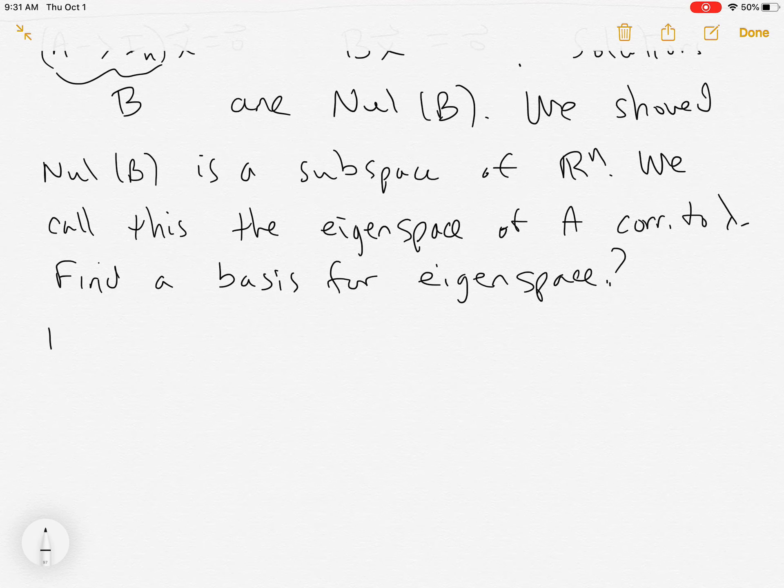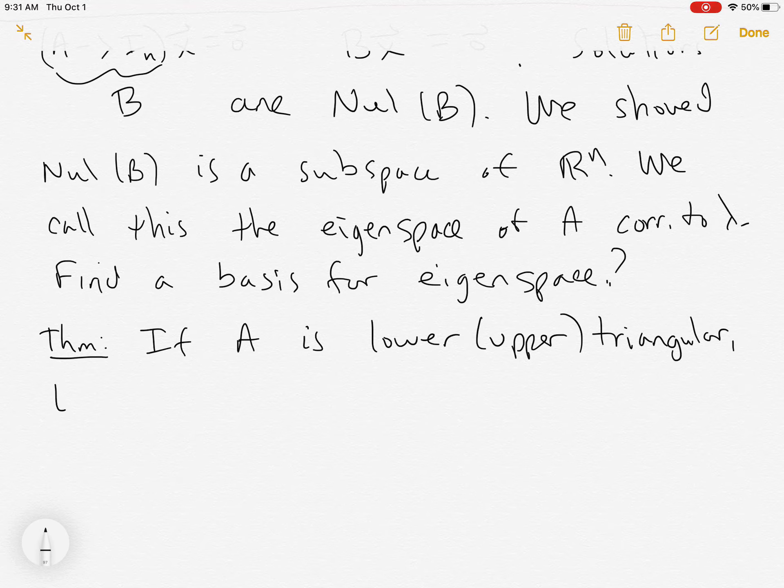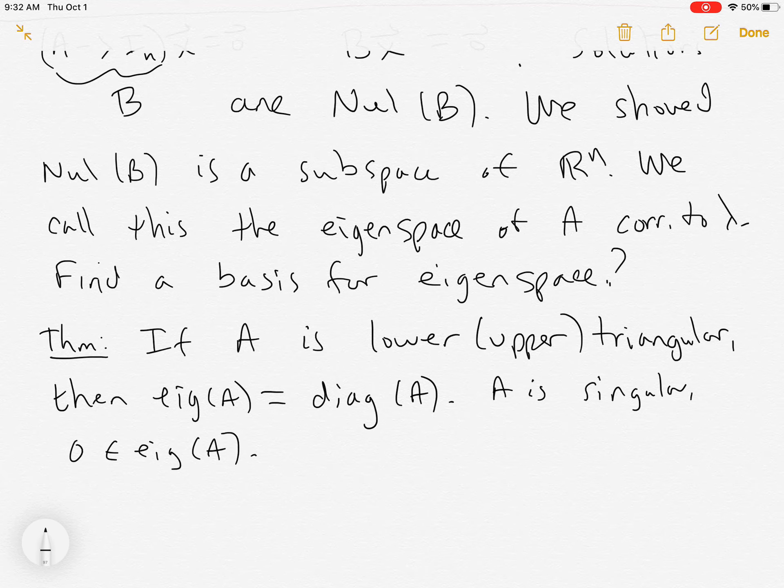And this is really going to get explored in the homework problems. All right, so here's a theorem that I gave you as a fact. If a matrix A is lower or upper triangular, then the eigenvalues of A equal the diagonal of A. And if the matrix is not invertible, if A is singular, then 0 is one of the eigenvalues. So you can't have the zero vector as an eigenvector, but you can have a zero eigenvalue.